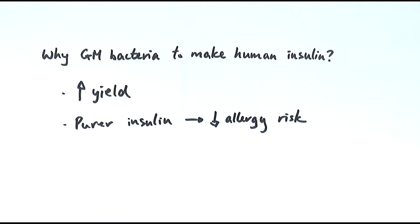We can also get purer insulin because the bacteria would mainly just be making human insulin and nothing else, so it's easier to purify it, which lowers the risk of allergies or diseases being passed on. It's also much cheaper because genetically engineering the bacteria is a relatively easy and cheap process, and the cost to maintain the bacteria for making insulin is very low. You just need the right temperature, some glucose and nutrient solutions — much cheaper than maintaining a farm of pigs just for making insulin.